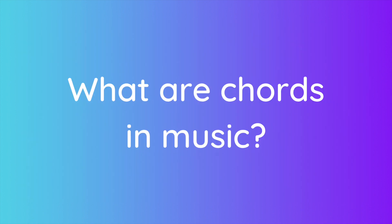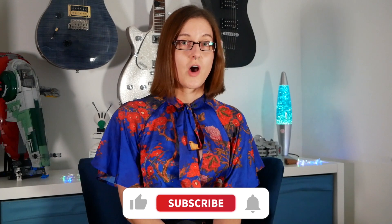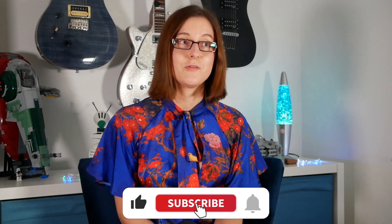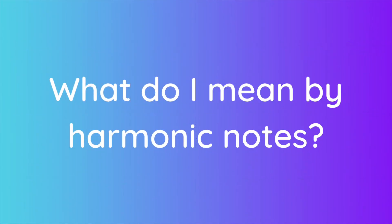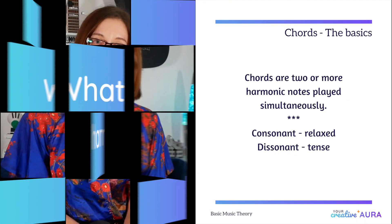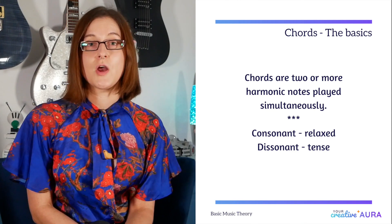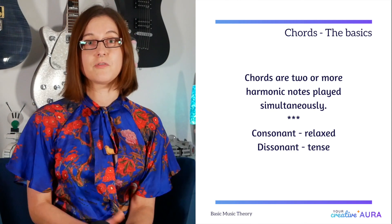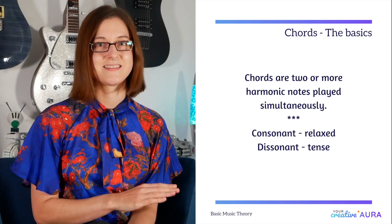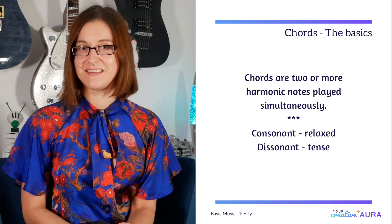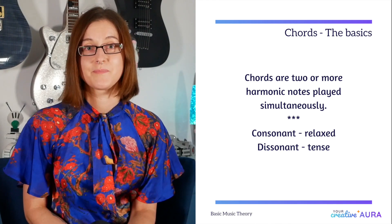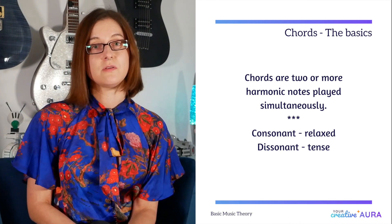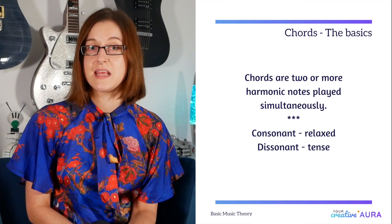What are chords in music? Chords are two or more harmonic notes played simultaneously. Harmonic notes in music theory are notes that move between sounds of consonant and dissonant. Notes played in harmony sound pleasing to the ear. However, we can also use them to create tension and unease.